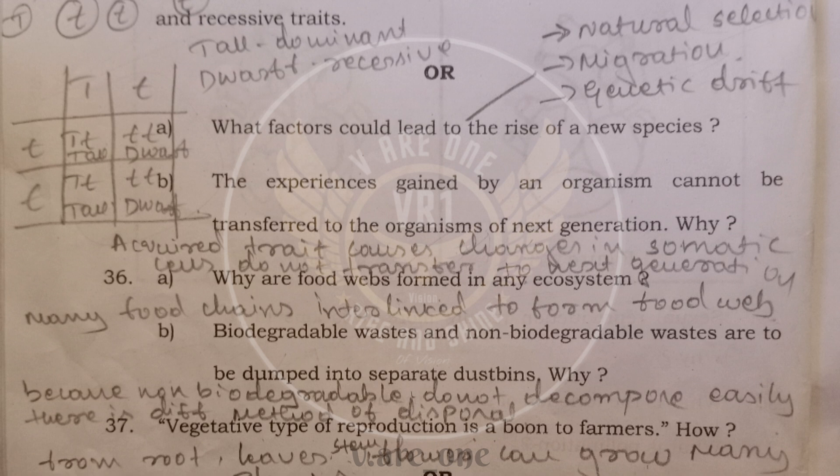Thirty-sixth, why are food webs formed in the ecosystem? Because in the ecosystem, many food chains are interlinked to form the food web. And B, biodegradable waste and non-biodegradable waste are to be dumped into separate dustbins. Because non-biodegradable do not decompose easily. There is a different method of disposal of a non-biodegradable substance. And for biodegradable, we have separate method of disposal. So we have to keep it separate.